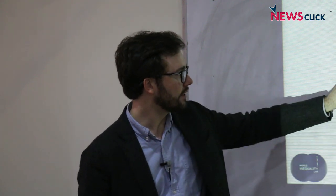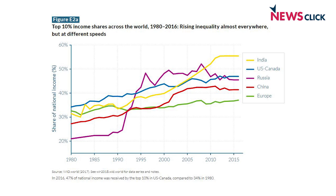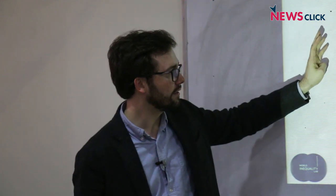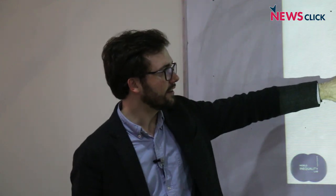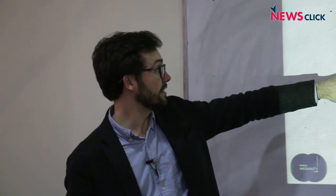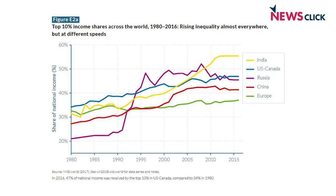If you look at China and India, you see in both cases a rise in inequality, but much more moderate in China, especially at the end of the period. And if you compare USA, Canada, and Europe, you also see a very similar inequality level in 1980 and a very different position at the end of the period.